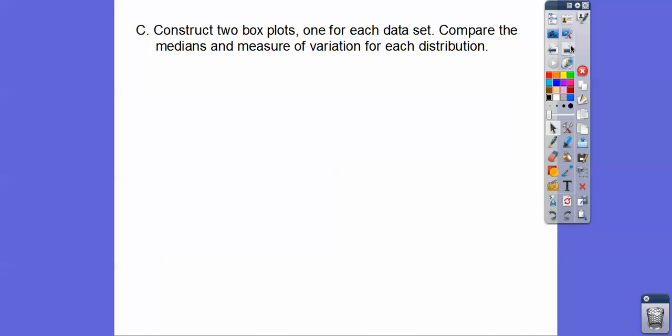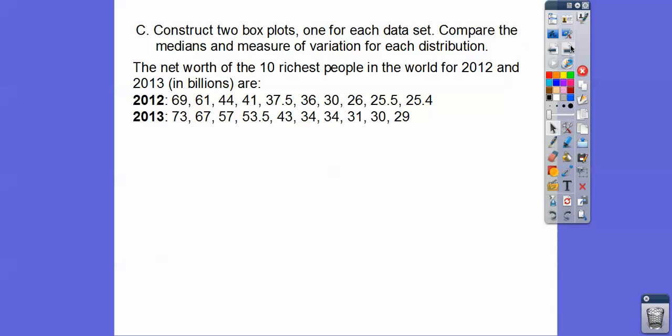Here we're going to construct two box plots, one on top of each other, one for each set of data. Then we'll compare the medians and measure the variation of each distribution. So how much do the numbers vary? Here's the net worth of the 10 richest people in the world for year 2012 and year 2013 in billions of dollars. Here's the richest guy, 69 billion, and they're in order, all the way down to the 10th richest guy at 25.4 billion. And then here's the 2013, the 10 richest people right there.